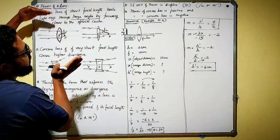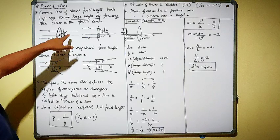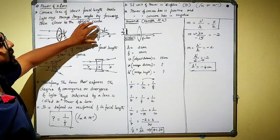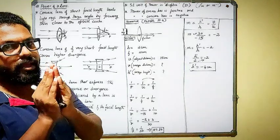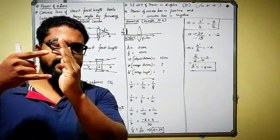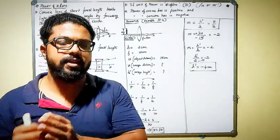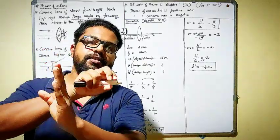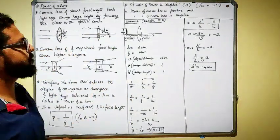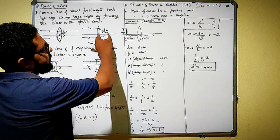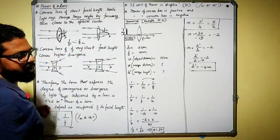Convex lens of short focal length bends the ray at larger angles by focusing them closer to the optical center. On the other hand, a convex lens of larger focal length — where the lens is thinner — the refracted angle is lesser. After refraction, the converging takes place and the focus point falls on a much farther point from the optical center.